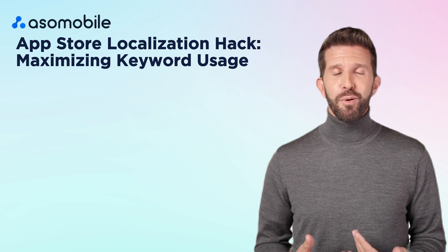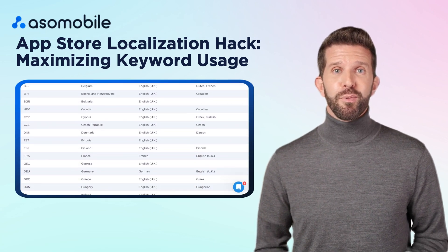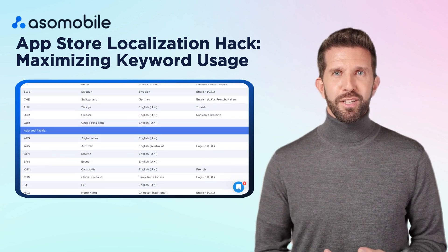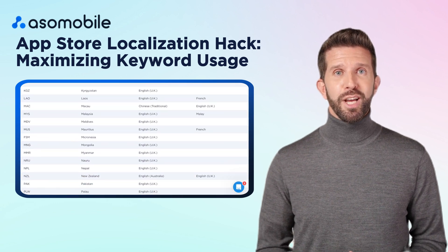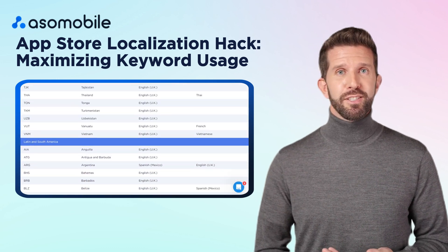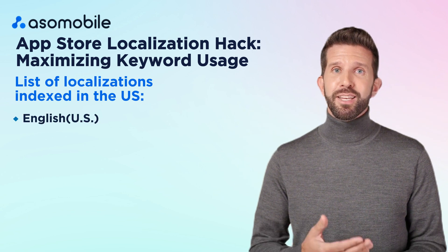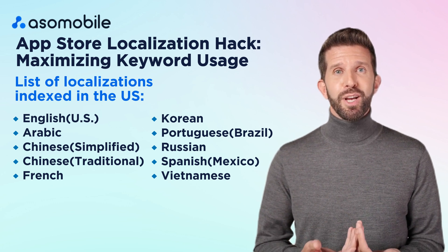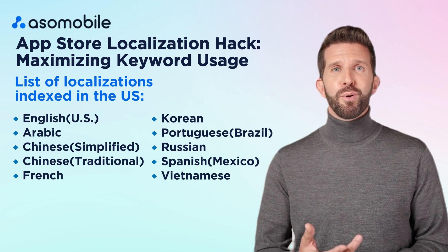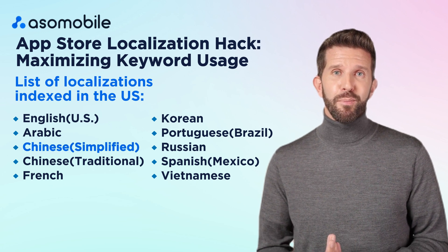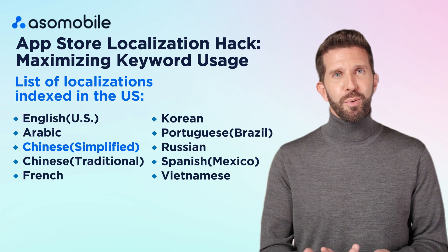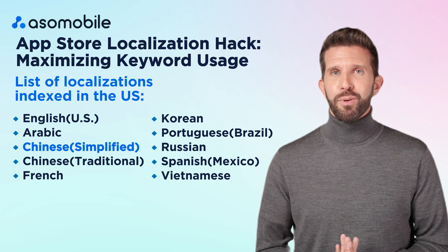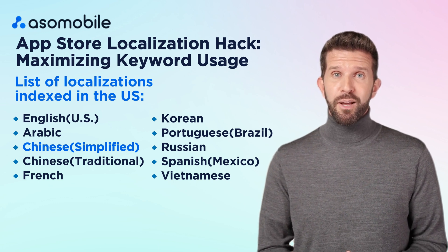Did you know that you can add extra keywords to your App Store metadata without affecting your app's user experience? This is one of the most powerful ASO hacks that many developers overlook. Most countries in the App Store are indexed in multiple languages, meaning you can use additional locales to expand your keyword pool. For example, if your app is only localized for the United States in English, the US App Store actually indexes 10 languages. If your app isn't localized in Chinese, you can use the Chinese Simplified locale and fill it with English keywords — giving you an extra 160 characters for keyword indexing to target more search terms without affecting existing users.